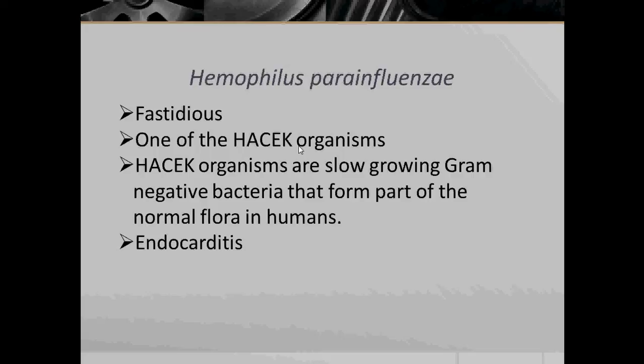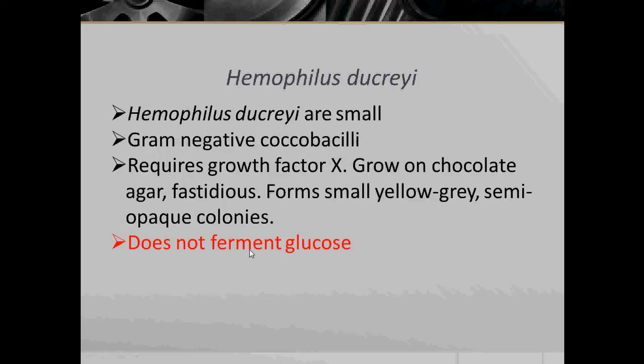Continuing the HACEK grouping: E represents Eikenella corrodens and K represents Kingella species. The next bacteria is Haemophilus ducreyi. Haemophilus ducreyi are small Gram-negative Coccobacilli. They require growth factor X and grow on chocolate agar and are fastidious. They form small yellow to grey semi-opaque colonies and do not ferment glucose.